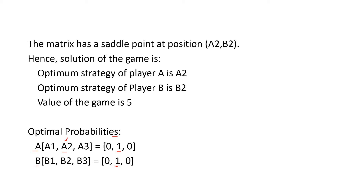When you get a game theory question, first check whether a saddle point exists. If a saddle point is there, find the intersection point and write the answer. Also write the optimal probabilities for the players. The next class will cover mixed strategy. Hope pure strategy is clear for you.